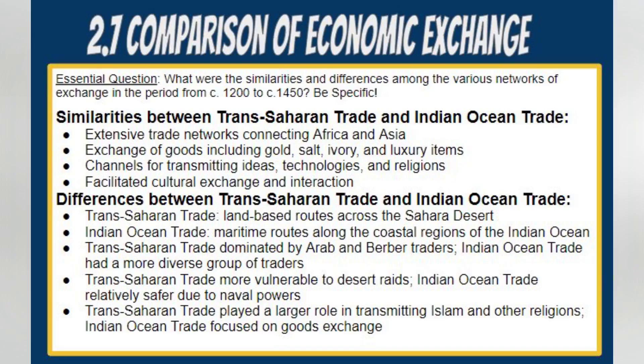Moreover, the Silk Road was predominantly influenced by the Chinese, who monopolized silk production and trade. Conversely, the Indian Ocean trade boasted a more diverse array of traders and merchants, including Arabs, Persians, Indians, and Chinese. Another disparity lies in the security of these trade networks. The Silk Road was more susceptible to the threat of bandits and raids due to its land-based nature. In contrast, the Indian Ocean trade enjoyed a relatively safer environment because of the presence of powerful naval powers such as the Chinese and the Indians, which contributed to safeguarding the maritime routes.